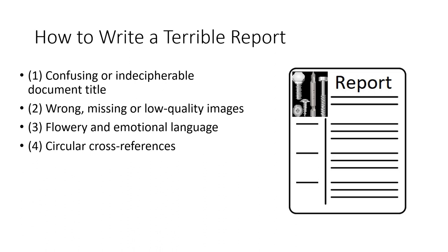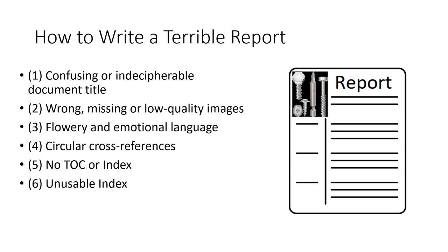Circular cross-references: we don't want to refer to one place, then come back to another place, and then circle back around. Depending on the length of the report, we want to have a table of contents and possibly an index. I don't use an index too often — sometimes I do, sometimes I don't — but we'll touch on it. And an unusable index, if we have one, is also something to avoid.